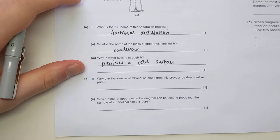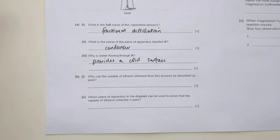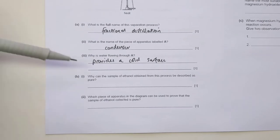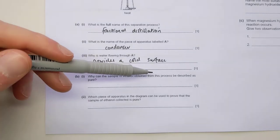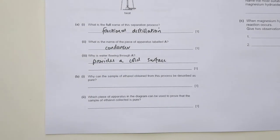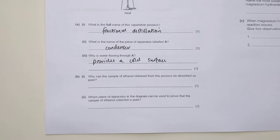Why can a sample of ethanol obtained in the process be described as pure? There's actually two interpretations of that question, which they allow the mark for each. One way you could read that question would be, what does the word pure mean? Because it says, why can it be described as being pure? So you could give the definition of pure.